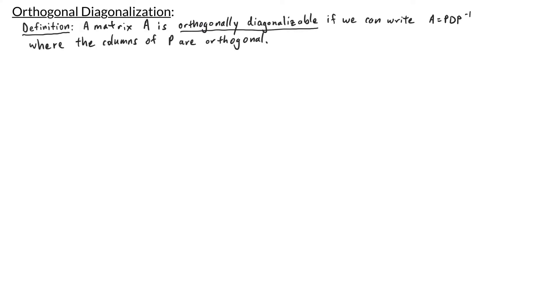In this video, we're going to talk about orthogonal diagonalization. In our last video, we looked at an example where we diagonalized a symmetric matrix. In the diagonalization A equals PDP inverse, we saw that in the matrix P, the columns were orthogonal, meaning that the eigenvectors were all orthogonal to each other. We say that a matrix A is orthogonally diagonalizable if we can write A equals PDP inverse, where the columns of P are orthogonal.